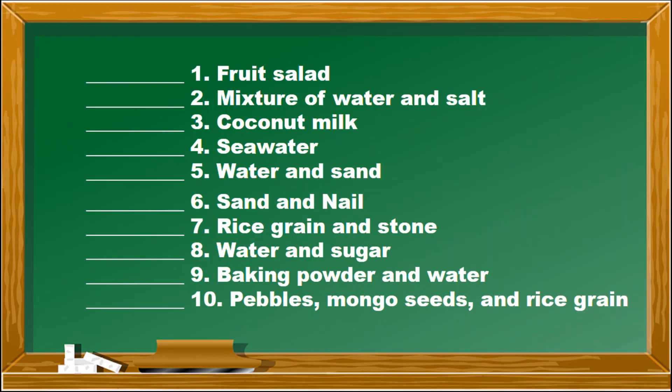Do it in your science answer sheets. Number one: fruit salad. Number two: mixture of water and salt. Number three: coconut milk. Number four: sea water. Number five: water and sand. Number six: sand and nail. Number seven: rice grain and stone. Number eight: water and sugar. Number nine: baking powder and water. Number ten: pebbles, mongo seeds, and rice grain. What is your answer in number one — fruit salad?